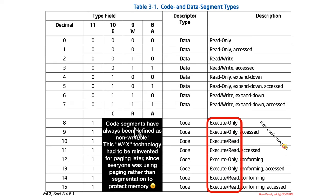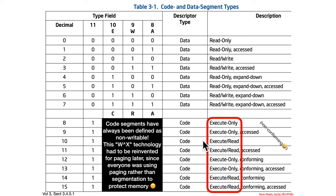Conforming segments might have made sense under Intel's original model where ring-one and ring-two were for system services, allowing ring-three to jump into ring-two before dropping back. But nobody designs things that way. For code segments, neither execute-only nor execute-read types are writable. This reflects the security property of writable XOR executable — you want memory to be writable or executable, but never both. Segments were originally designed this way, but since people didn't use them properly, this had to be reinvented at the paging level.